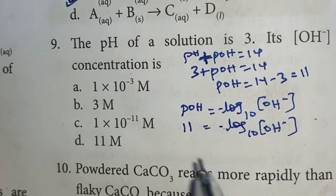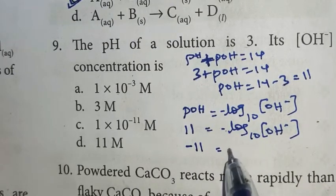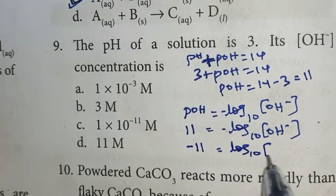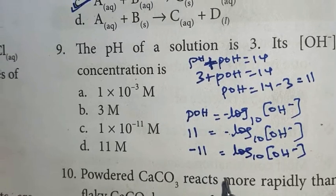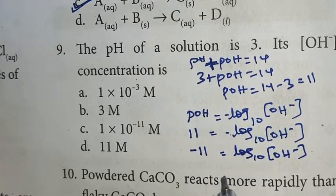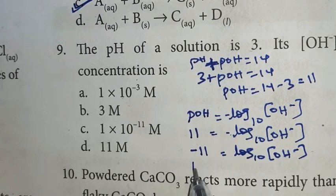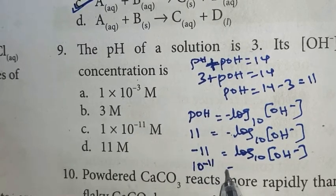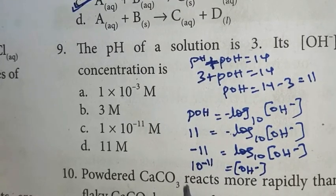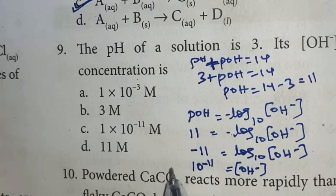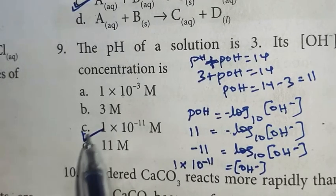Now multiply both sides by minus, then minus 11 equals plus log10 OH minus. We can remove the log, so this side will be in exponential term, that is 10 power. So 10 power minus 11 equals OH minus, that is hydroxyl concentration. We can write as 1 times 10 power minus 11. So option C is the right answer, 1 times 10 power minus 11 mole.